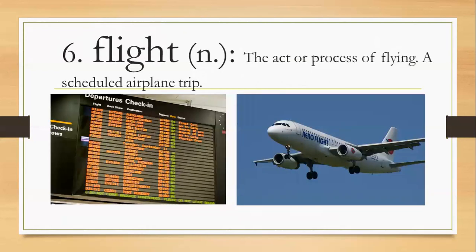Number six, flight, F-L-I-G-H-T, flight. It's a noun, the act or process of flying, a scheduled airplane trip. If you go on a trip, you go to Disney World, you go to Spain, you're going to Portugal, you're going to another country, or even here inside Venezuela, probably you're going to Merida, you're going to Margarita Island, you might take a flight to that place. So you get into an airplane and you have a flight to your destiny place.